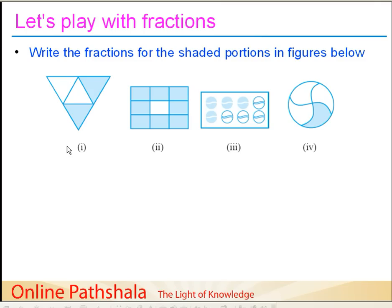We have to write the fractions for the shaded portions in the figures below. We have a triangle divided into some parts — first, as good practice, find the denominator by checking if all parts are equal. A quick look shows yes, all parts are equal. How many parts do we have? We count 1, 2, 3, and 4. So the denominator is 4. Now considering the shaded portion — we are taking out 2 parts — so the numerator is 2, and this figure is represented by 2 by 4.